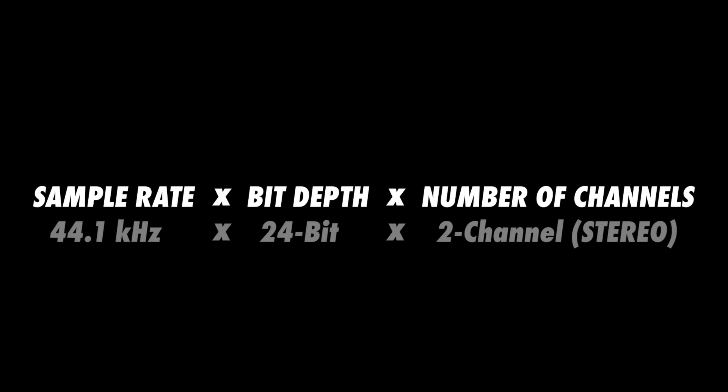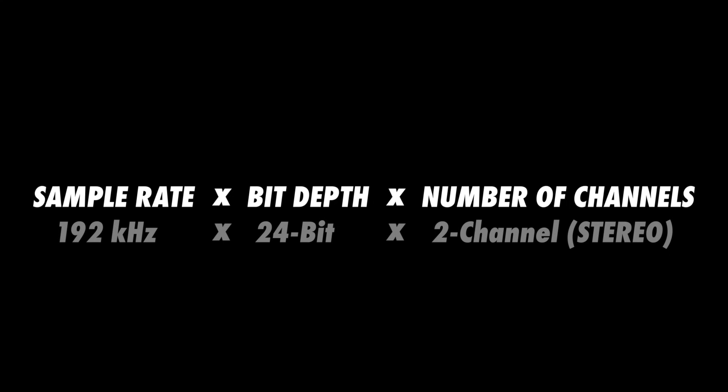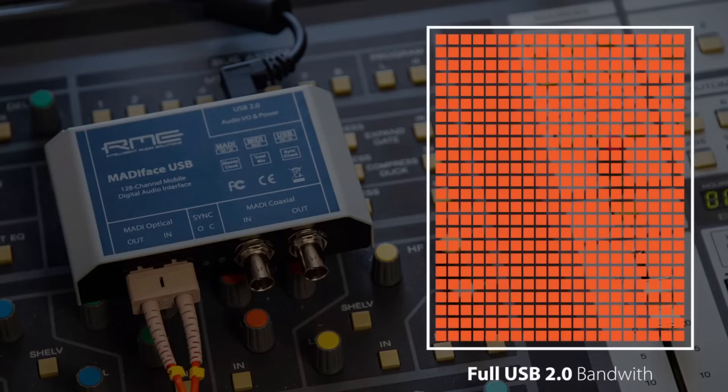Transmitting audio data streams alone requires a relatively small amount of bandwidth. To calculate the bandwidth needed to transmit an audio file, you can use this formula: sample rate times bit depth times number of channels. This means to transmit a 24-bit, 44.1 kilohertz stereo file, you'll theoretically need about 2 megabits per second of bandwidth. Even if you up the sample rate to 192 kilohertz, you'll still only need about 9 megabits per second — equating to about 240 stereo channels at 44.1 kilohertz, or 53 stereo channels at 192 kilohertz over a USB 2.0 connection.